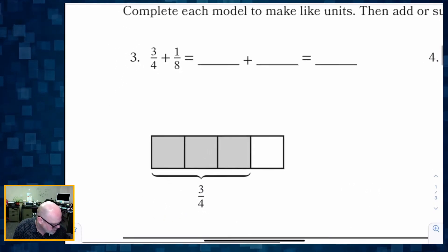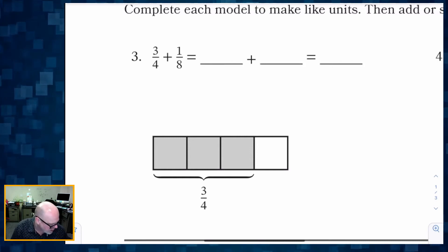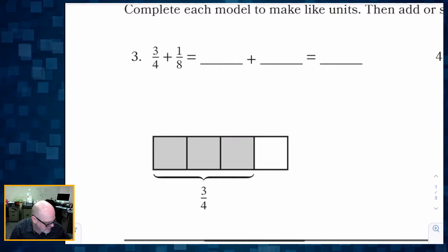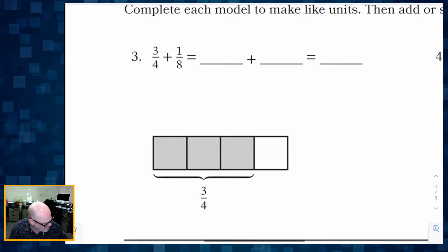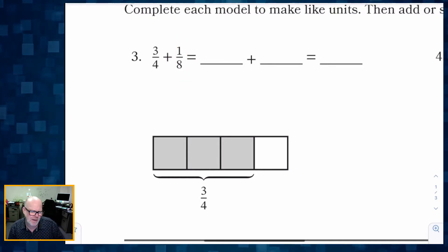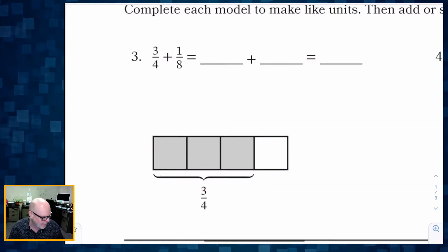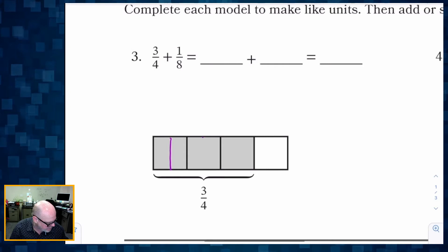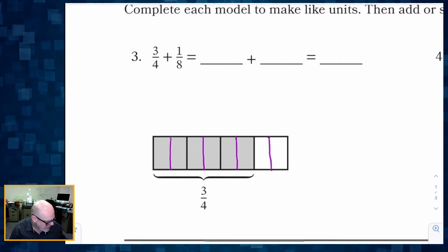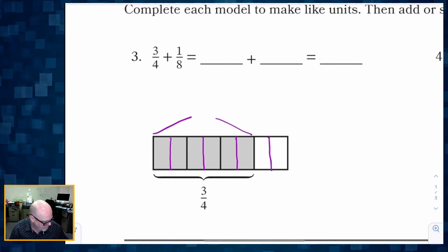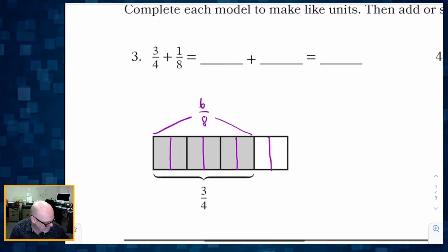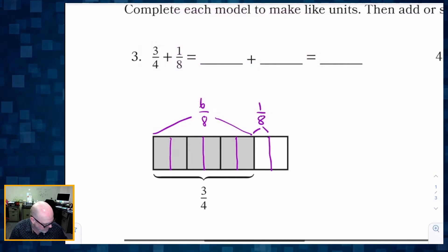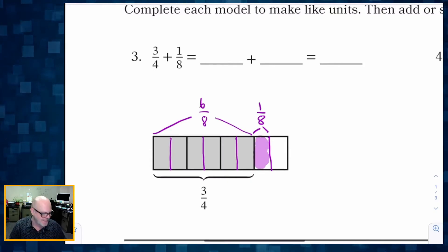Now we're going to use some pictorial representations. We're going to start with three-fourths plus one-eighth and model three-fourths on a tape diagram. Without drawing a new tape diagram, let's add on to this existing one — how would we represent one-eighth? If I cut each of the four pieces into two, instead of having three-fourths I now have six-eighths, which means one-eighth goes right here.